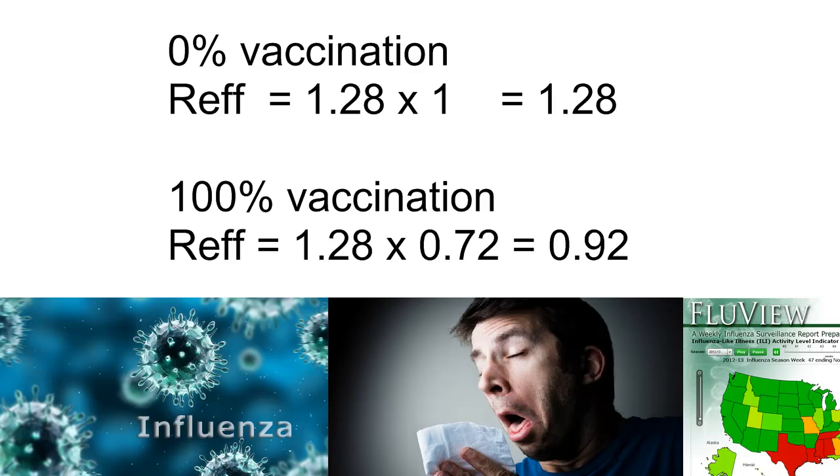At 100% vaccination with a 28% effective flu shot, the effective reproductive rate is flu's R₀, 1.28, times 0.72, representing 72% susceptibles, which equals 0.92, or declining infection. Each person is infecting slightly less than one other person.